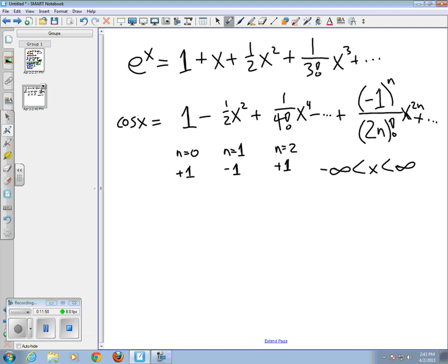And we can also use a summation notation. So, cosine x equals the sum from n equals 0 to infinity. Our numerator is negative 1 to the n to give us our alternating signs. The denominator is 2n factorial, which gives us factorials of even numbers. And then we want the corresponding even powers of x.